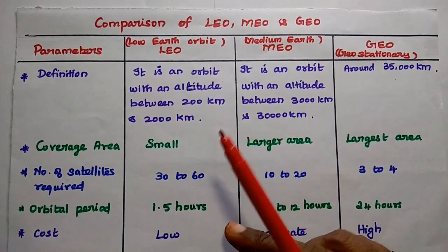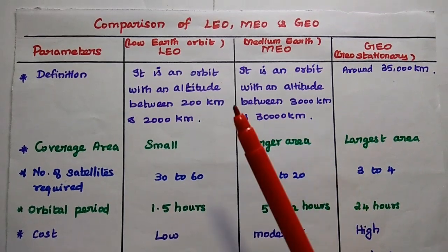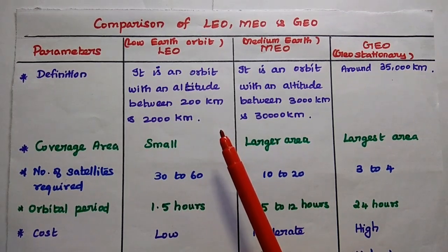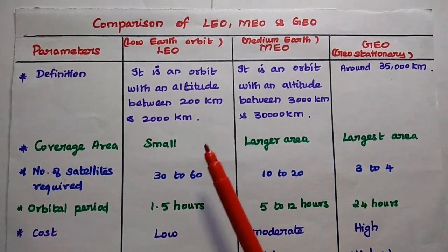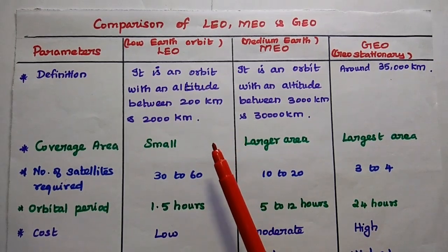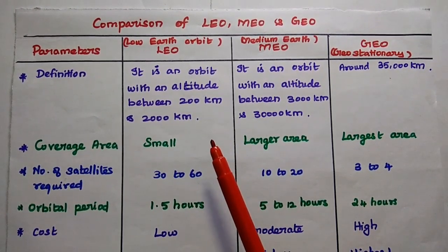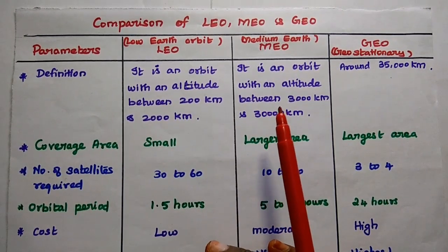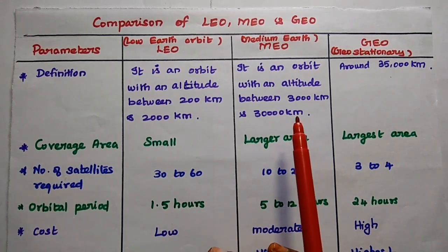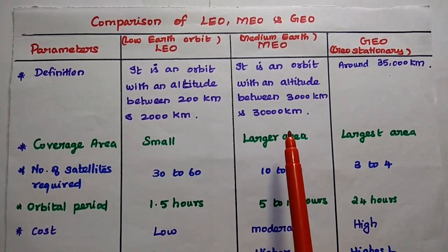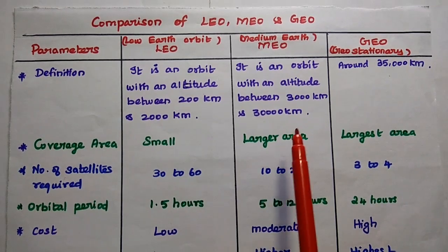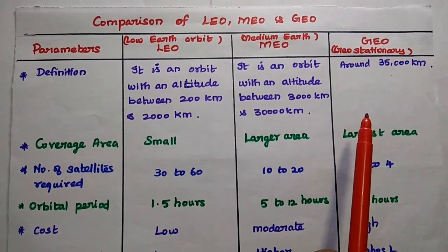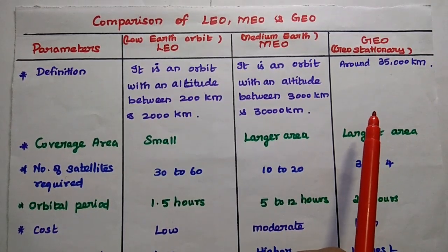Simply, LEO, MEO, and GEO. LEO is an orbit with an altitude between 200 km and 2000 km from earth's surface — we can also consider orbits as low as 160 km. MEO is an orbit with an altitude between 3000 km and 30000 km above the earth's surface. Geostationary orbit is around 35000 km to 36000 km.